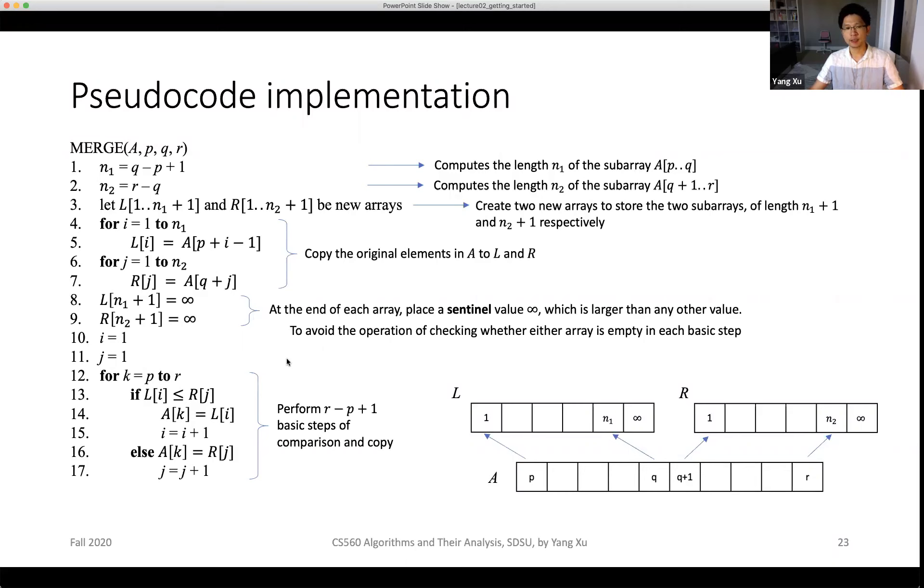The key merge operation happens in the next for loops, the last for loop from line 12 to line 13. This step performs R minus P plus 1 basic steps, which is basically the number of original elements in A. It performs that many basic steps of comparison and copy.